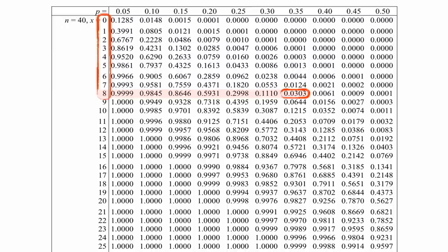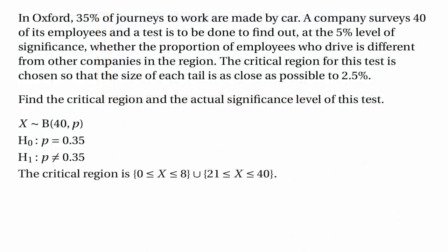For the upper tail, we scan up the column until we get to the number as close as we can get to 0.975, and that number is 0.9827. 0.9827 is the probability of getting 20 or fewer, and 1 minus that is the probability of getting 21 or more. So the upper part of the critical region is the numbers 21 or greater. The full critical region for this test is the numbers between 0 and 8 inclusive, and the numbers between 21 and 40 inclusive.